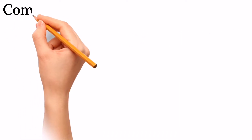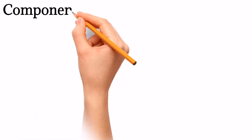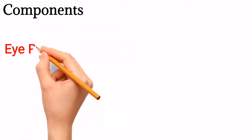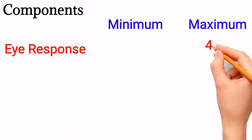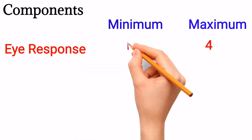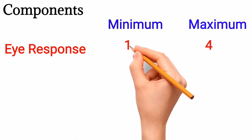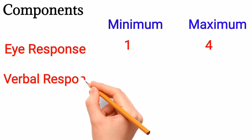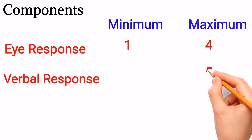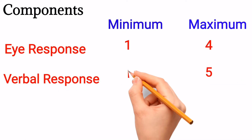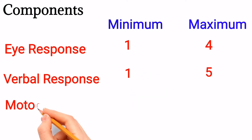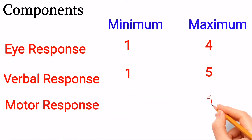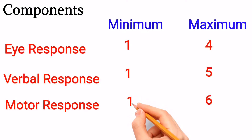Three components of GCS are: Eye response, with a maximum score of 4 and minimum of 1; Verbal response, with a maximum score of 5 and minimum of 1; and Motor response, with a maximum score of 6 and minimum of 1.